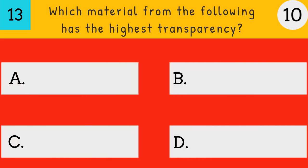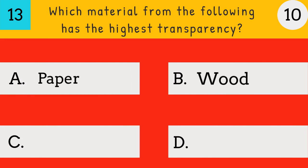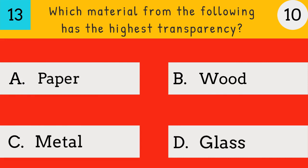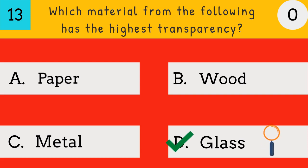Which material from the following has the highest transparency? Paper, Wood, Metal, Glass. Answer: Glass. Glass has the highest transparency.